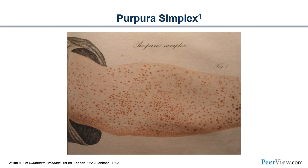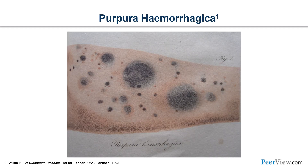He described patients who had interesting lesions — which you can all recognize as petechiae — calling these purpura simplex. He then described larger lesions, which we now know to be ecchymosis or purpura hemorrhagica, hence the name of this disease.